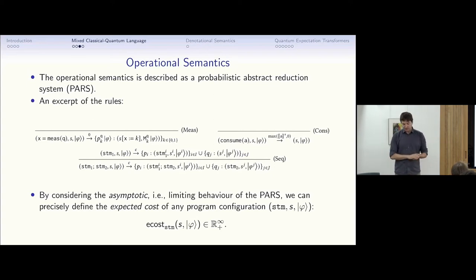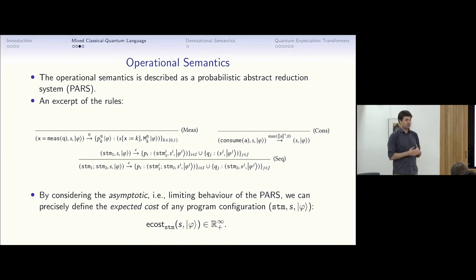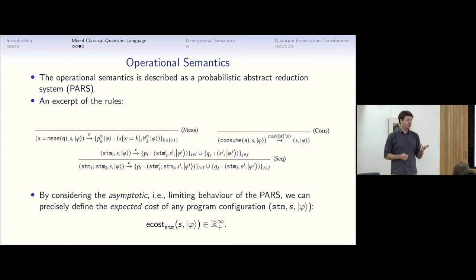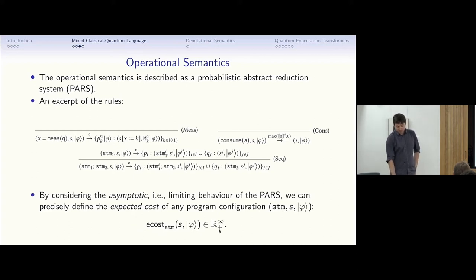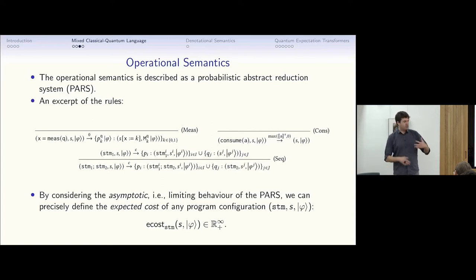We're not going to cover the notation details — just copy-pasting some rules shows there are technicalities involved. As I explained, we're interested in determining the expected cost, so we have to consider the asymptotic behavior of this reduction relation. Because we have four computational effects — probabilistic effects, quantum effects, recursion, and cost — it becomes kind of complicated. Defining the expected cost (a non-negative real or positive infinity, which can happen with divergence) actually requires some effort, but it can be achieved.